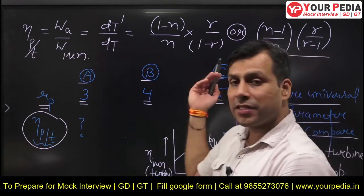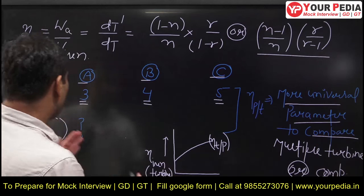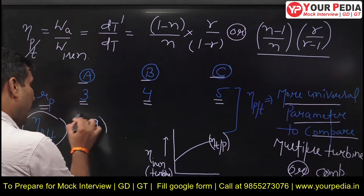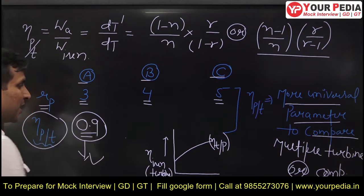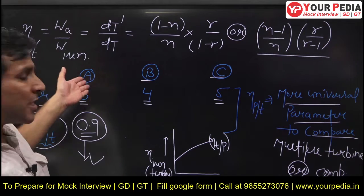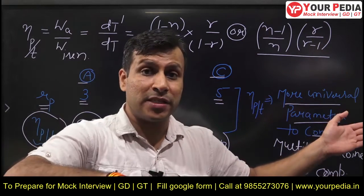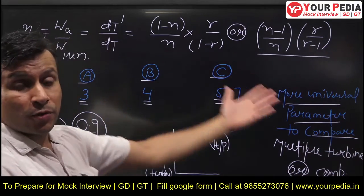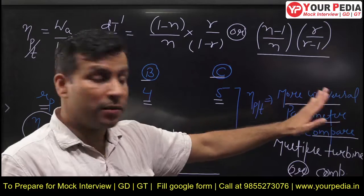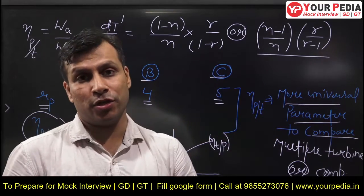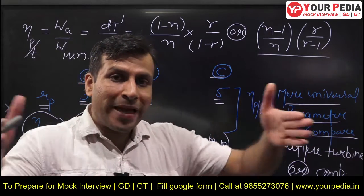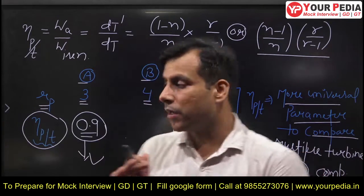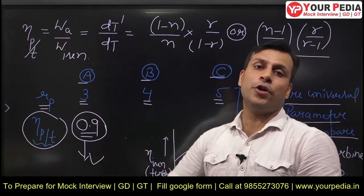But if you want to compare multiple turbines or compressors which have different pressure ratios, you can compare them very effectively using polytropic efficiency. So polytropic efficiency will be different for different machines. Suppose for one turbine you get polytropic efficiency of 90% - you can say this is more efficient. It may be the case that this turbine has a lower isentropic efficiency, but if it has a higher polytropic efficiency, it will be better compared to one having a higher compression ratio.